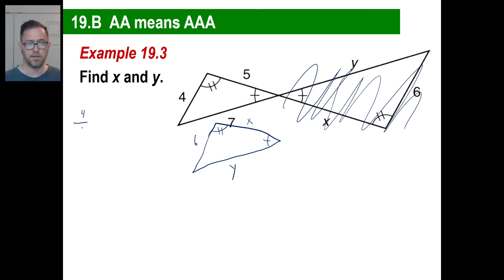So cross multiply gives me four X. Six times five gives me 30. And X is going to be 30 divided by four, which reduces to 15 divided by two. That's my X.